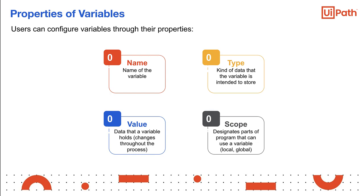Lastly, scope defines from where the variable can be accessed in the workflow. The variables can be global or local. When the user defines a variable for the first time, it has a global scope. That is to say, it can be accessed from every part of the program. If the user defines a variable with a local scope, then outside processes cannot access it. There are always several variables in use, so the users should avoid making multiple variables unnecessarily global as it may cause efficiency issues.